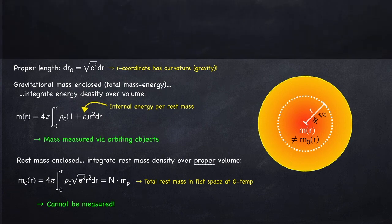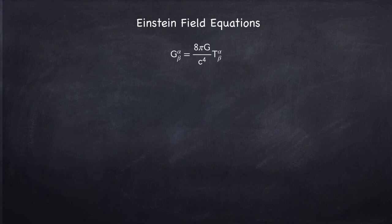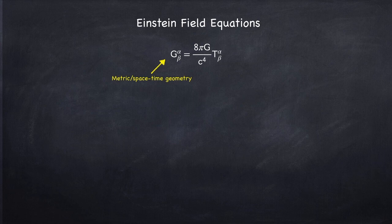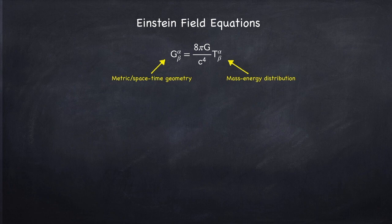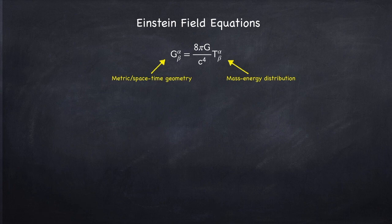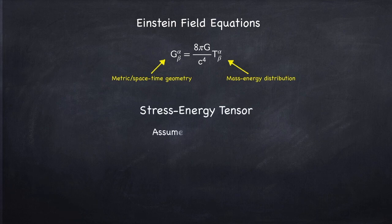Now that we understand the difference between these two masses, let's take a look at the Einstein field equations. On the left-hand side we have the Einstein tensor, which tells us about spacetime geometry and contains information about the metric. On the right-hand side we have the stress-energy tensor, which represents the mass-energy distribution. This is in a sense the relativistic version of Newton's law of gravitation. I'm not going to solve the full Einstein field equations because it's extremely tedious — I'll just set it up and give you the results. We need to know the stress-energy tensor T alpha beta, and we're going to assume a perfect fluid.